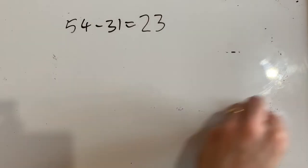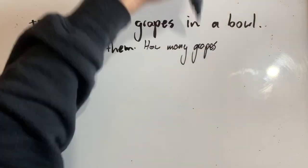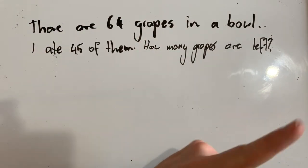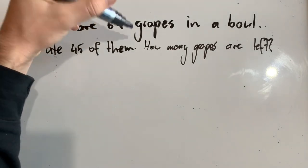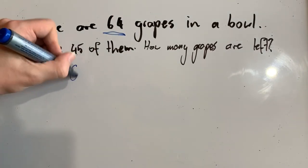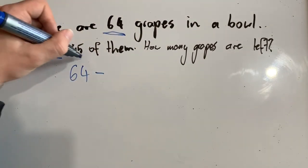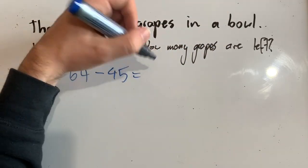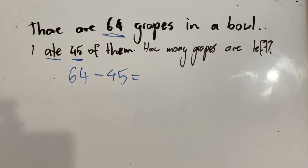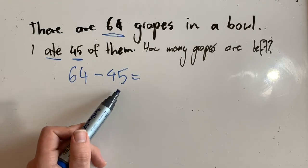Let's try a worded problem. There are 64 grapes in a bowl. I ate 45 of them. How many grapes are left? So what am I actually trying to find out? I started with 64, then I'm taking away 45 of them, and I'd like to know how many are left. I'm going to try adding to get this answer: what do I need to add to 45 to get to 64?